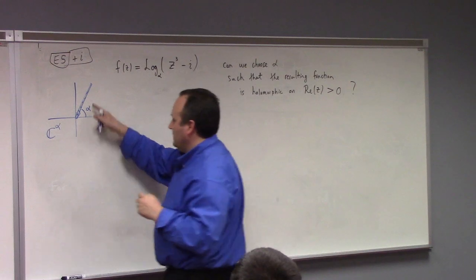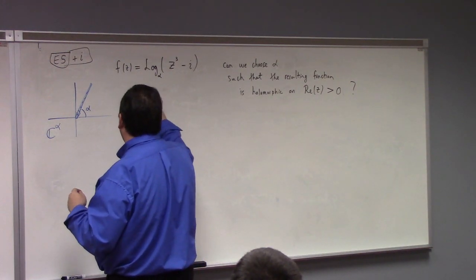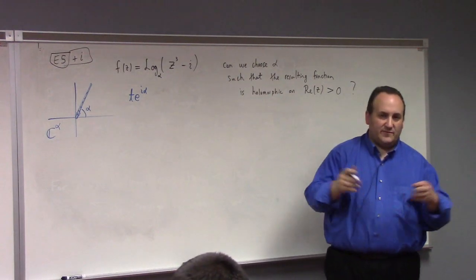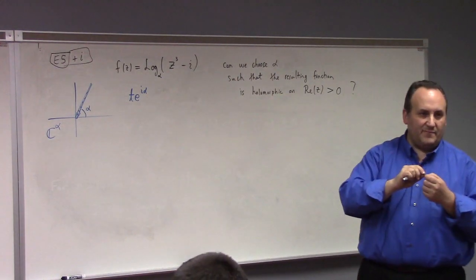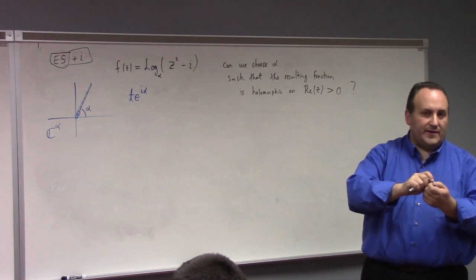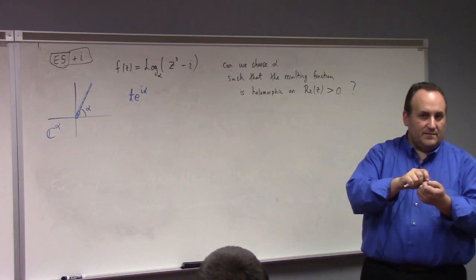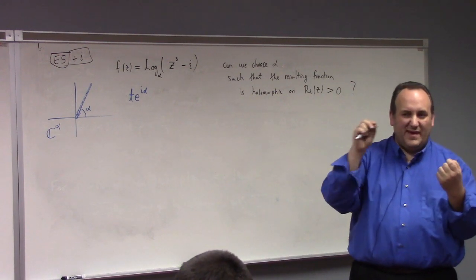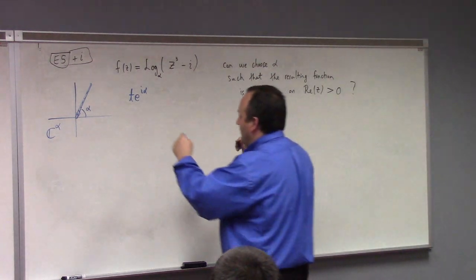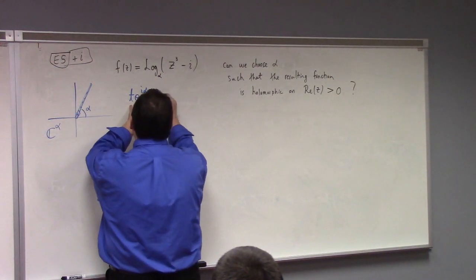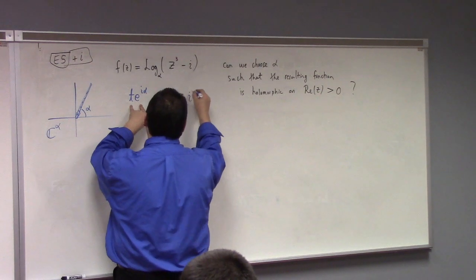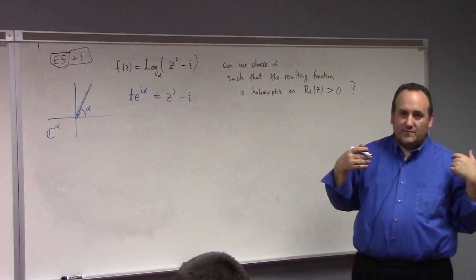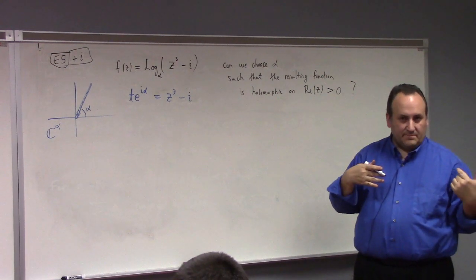What is this? These points have the form T e to the i alpha for T non-negative. That's a parameterization of the ray of badness. What are you trying to avoid? Where is the badness for your function? It's where T e to the i alpha is equal to z cubed minus i. You have to solve for z to understand where the badness goes in general.